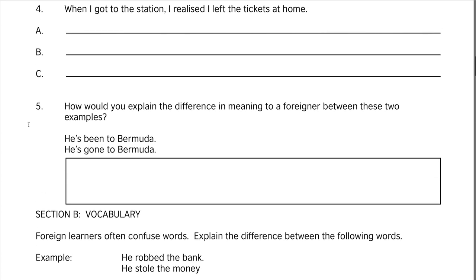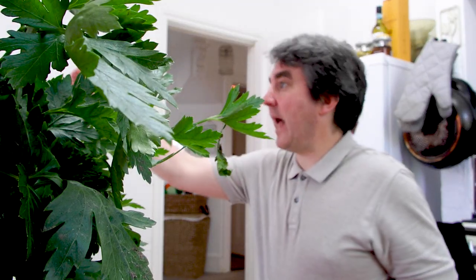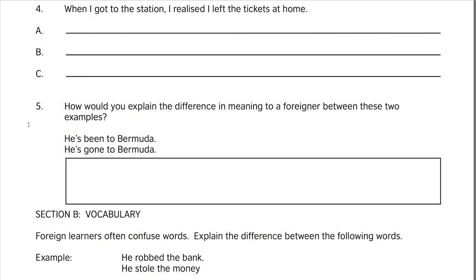Number five: how would you explain the difference in meaning to a foreigner between 'He's been to Bermuda' and 'He's gone to Bermuda'? My take: 'He's been to Bermuda' means he's visited and returned from Bermuda, whereas 'He's gone to Bermuda' means he's visited but has not yet returned. I would explain the difference on the whiteboard — drawing a flight there and a flight back for 'been,' and just a one-way flight for 'gone,' maybe with a cross on the return arrow.